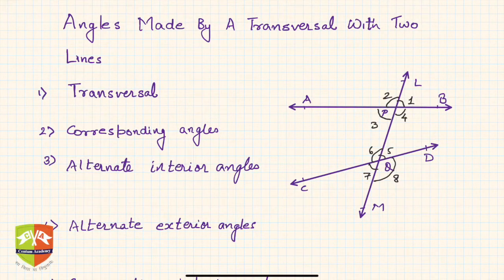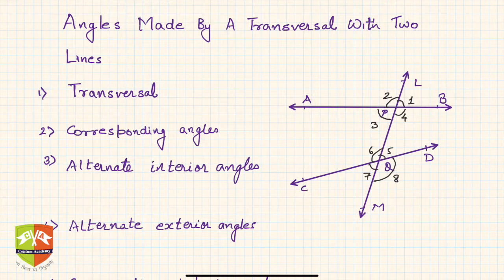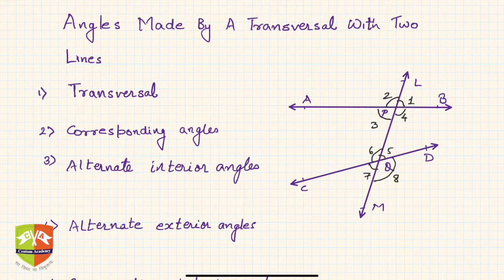Hello friends, welcome again to another session on lines and triangles. Having seen different types of angles and some relations with angles like linear pair and vertically opposite angles, it's time to go further deep and understand some more properties related to lines and angles. In this case, we are going to study angles made by a transversal.